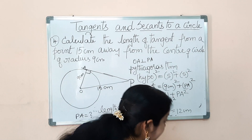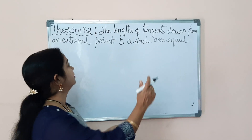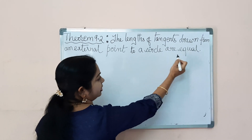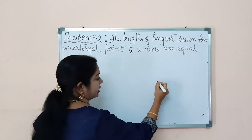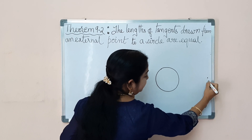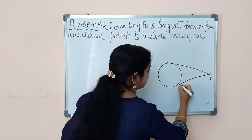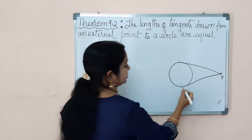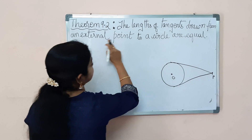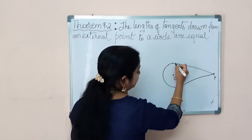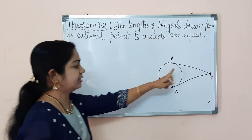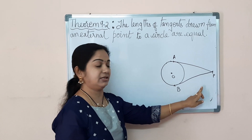Now let's see one theorem: The length of the tangents drawn from an external point to a circle are equal. What does this theorem say? Let the external point be P and let the center be O. We draw two tangents from P — let the points of contact be A and B. We need to prove that the lengths PA and PB are always equal. This is an important theorem.